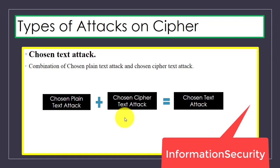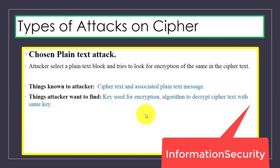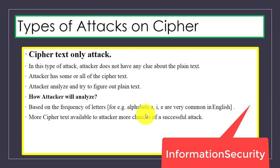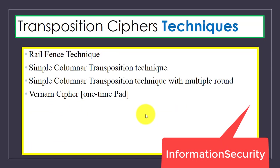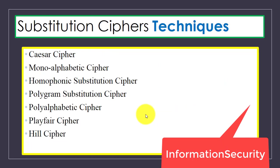The last one is the chosen text attack, which is a combination of the chosen plaintext attack and chosen ciphertext attack. To summarize, we discussed different types of attack on cipher: chosen ciphertext attack, chosen plaintext attack, known plaintext attack, and ciphertext only attack, as well as different transposition and substitution techniques covered in Unit 2.